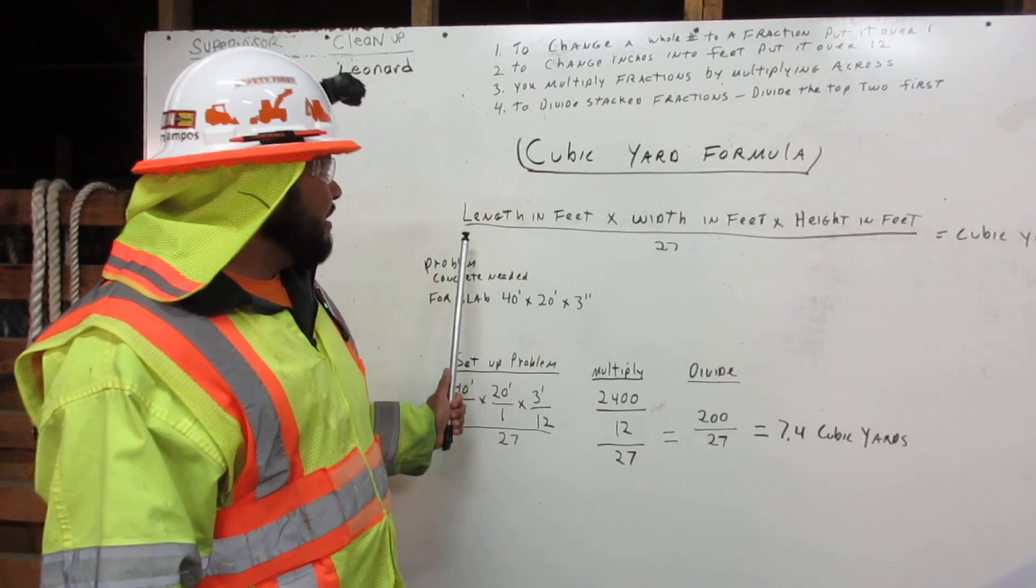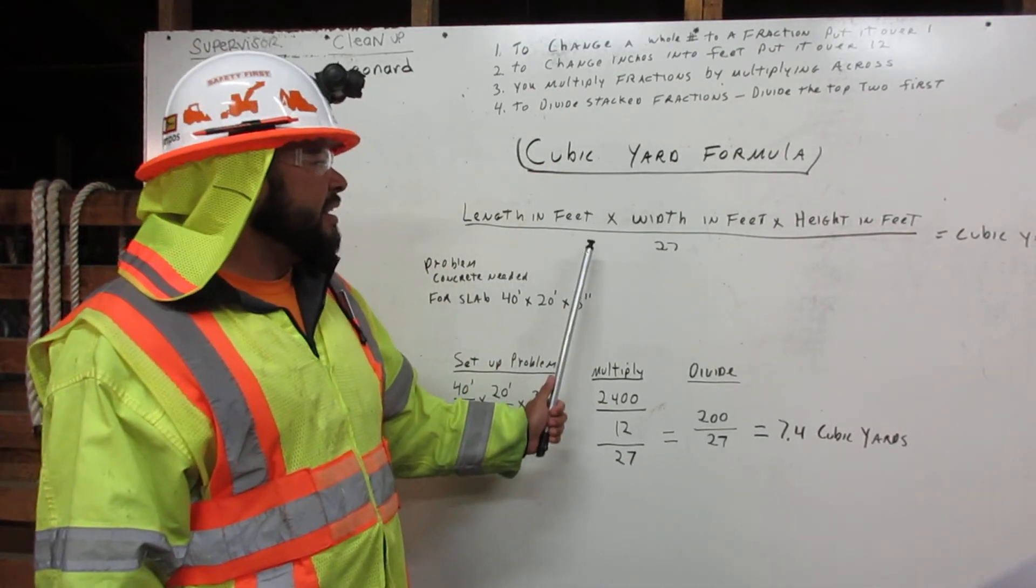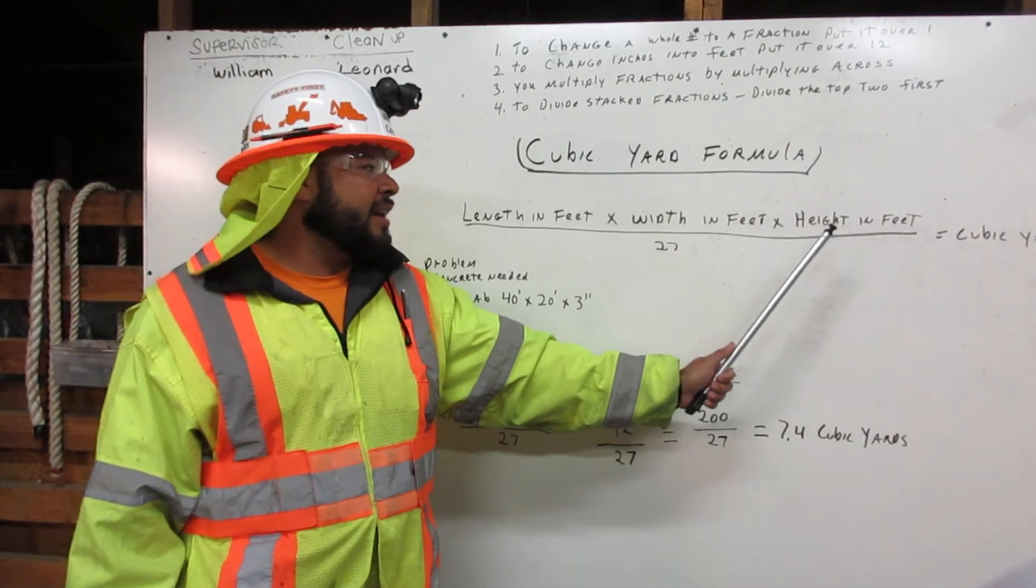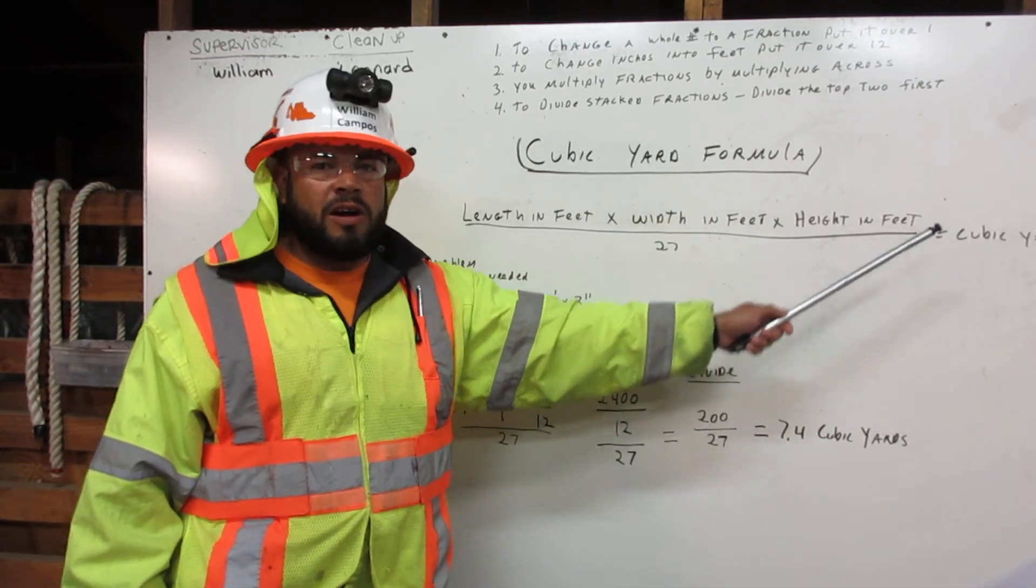This is the formula: length in feet times width in feet times height in feet, and we get our result in cubic yards. Thank you.